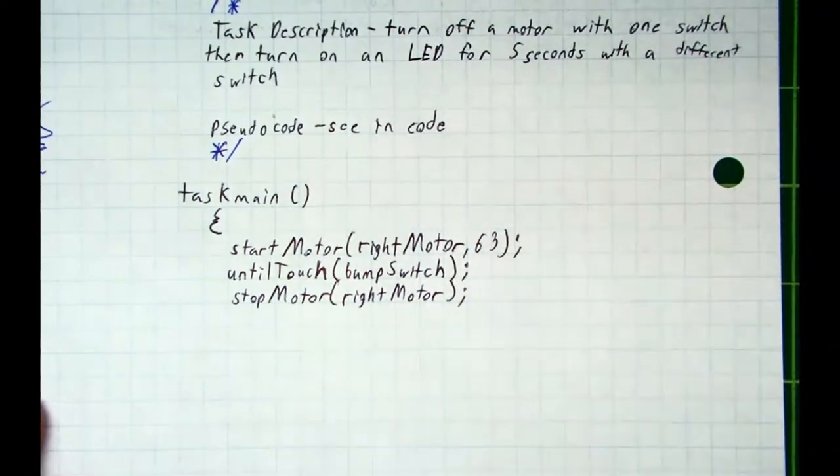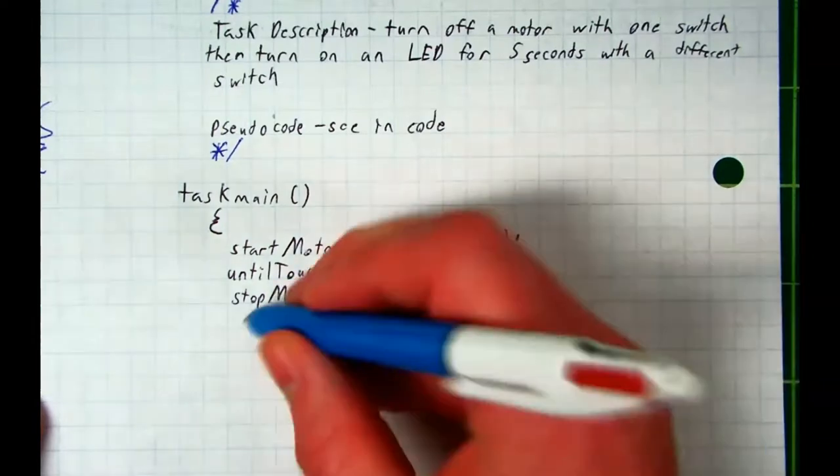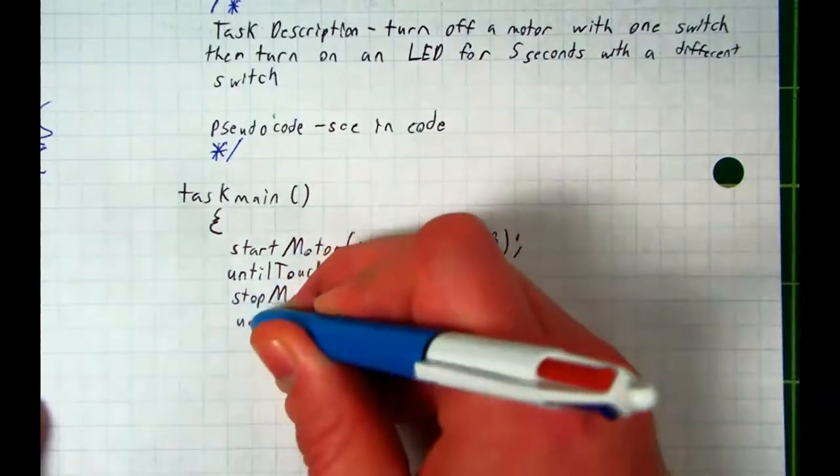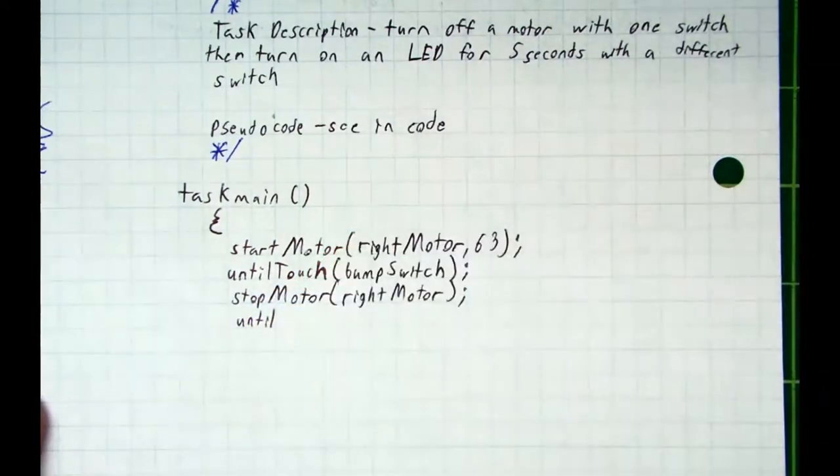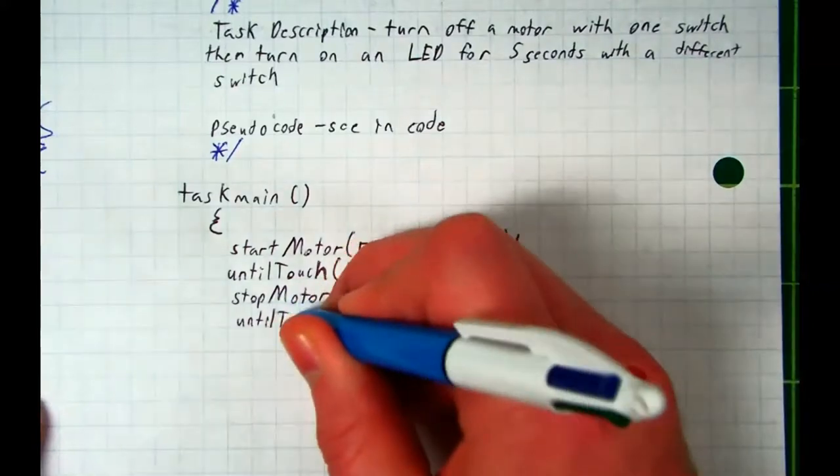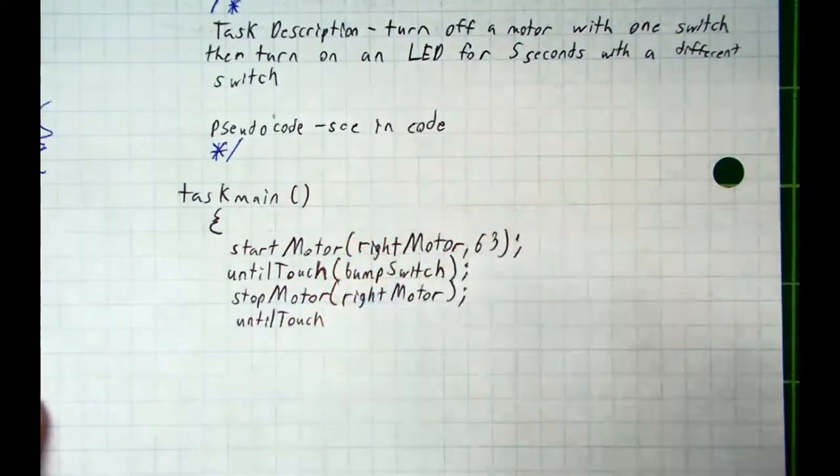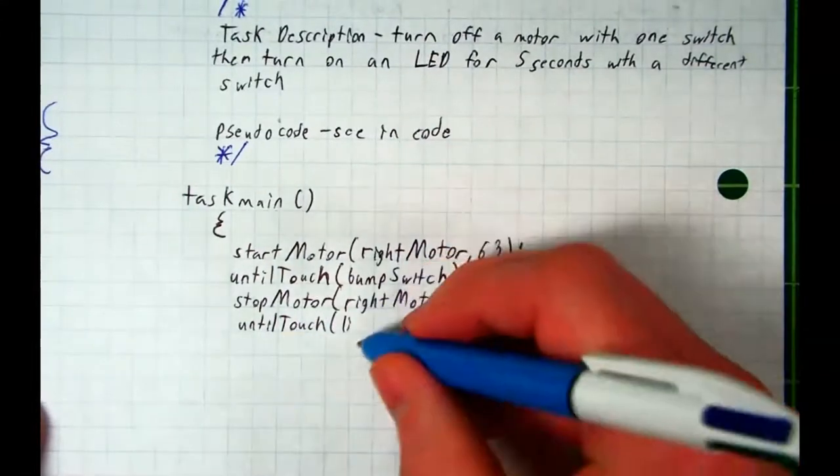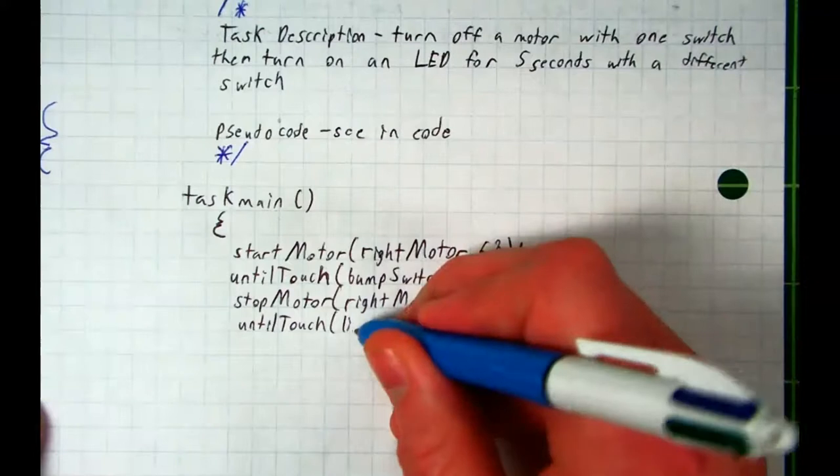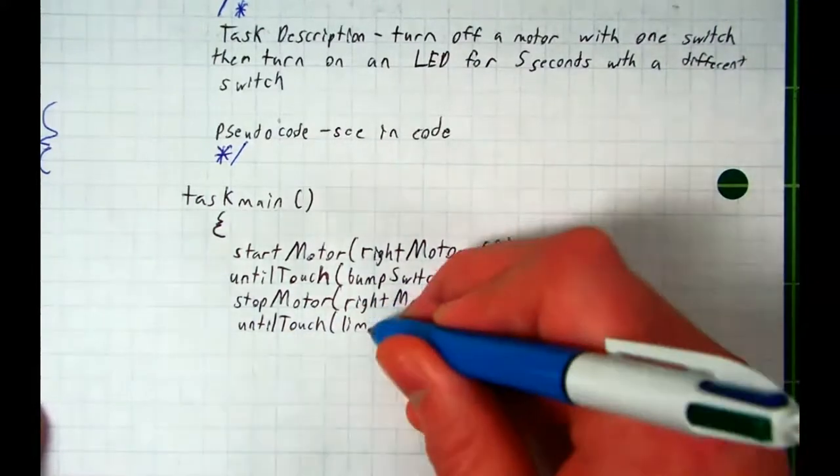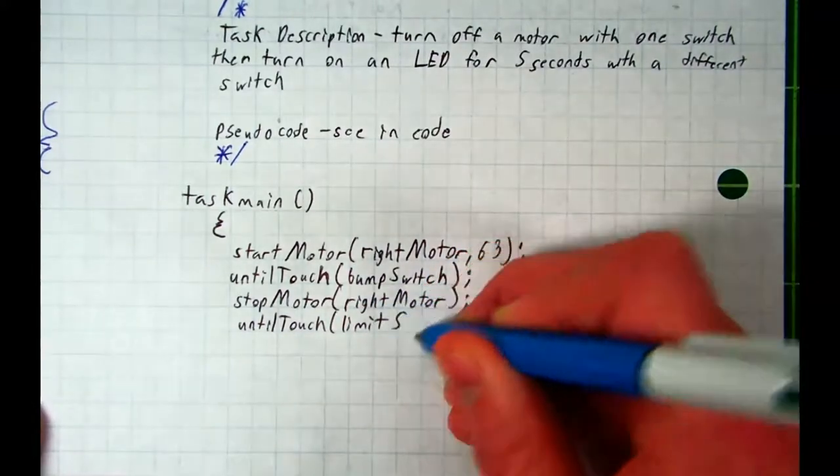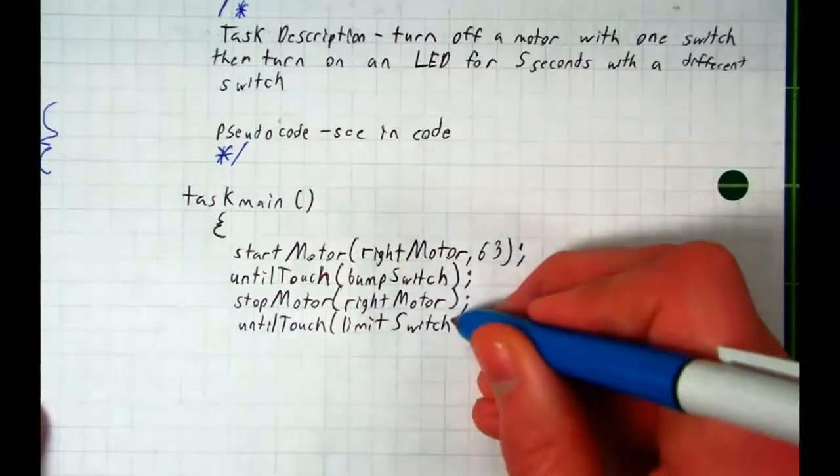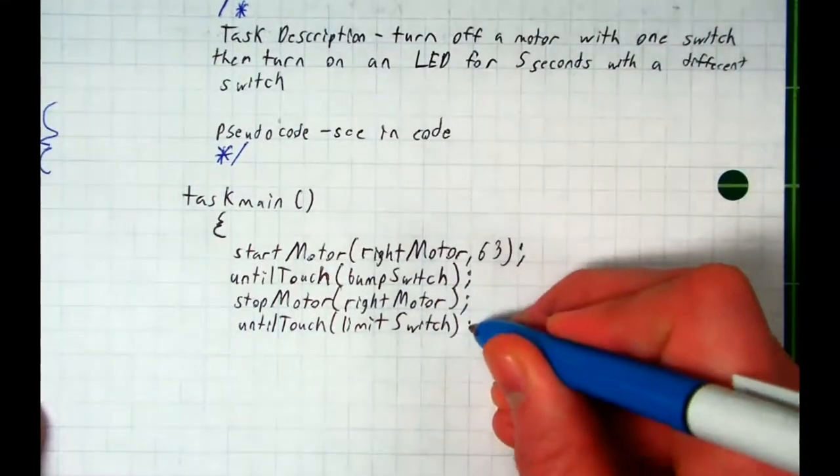Then what? We turn on an LED with the different switch. So I'm going to say after this line, wait untilTouch again, but I'm going to label the other switch. So parentheses, limit switch. Make sure you capitalize the second or the first letter of the second word every time. So that's uppercase T and uppercase S for switch. Close your parentheses and add a semicolon.